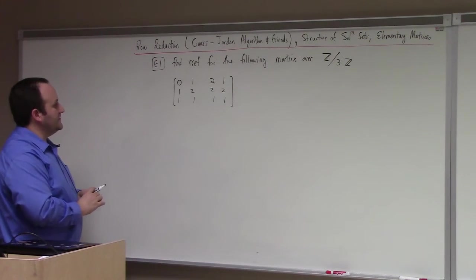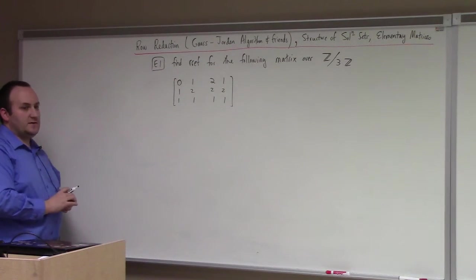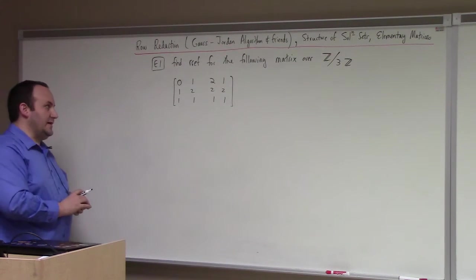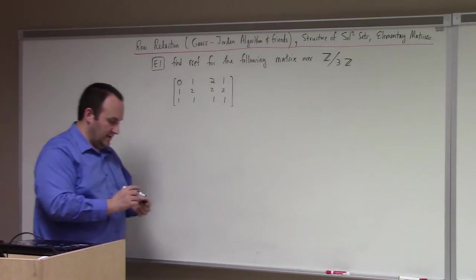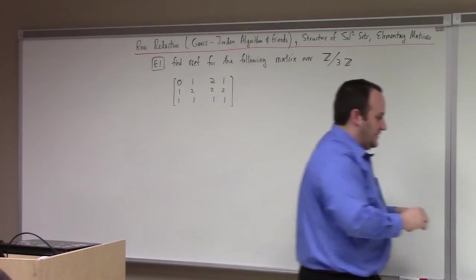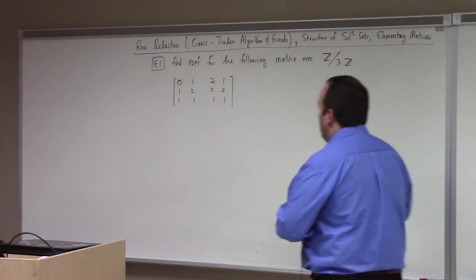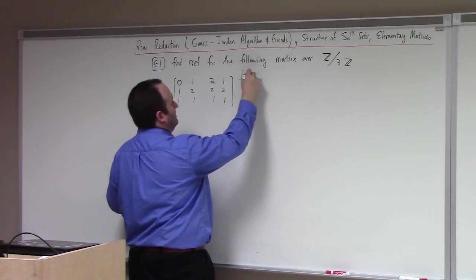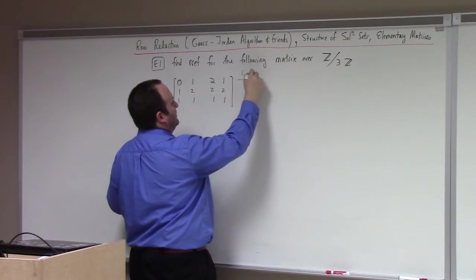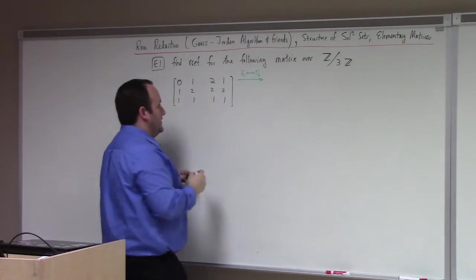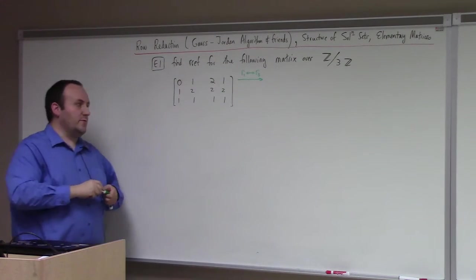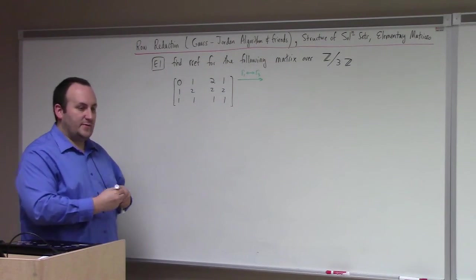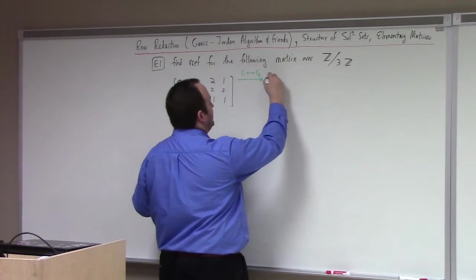So first order of business: I have to find my first pivot. We want our first pivot position to be in the top row. I'm going to allow the three elementary row operations to accomplish that goal. So I'll use a type 1 operation — type 1 swaps. So we'll swap row 1 and row 2. Actually, let's swap row 1 and row 3.